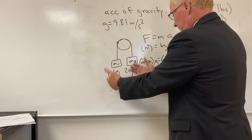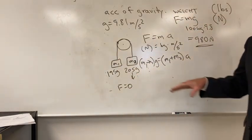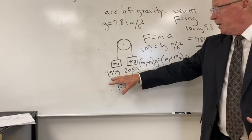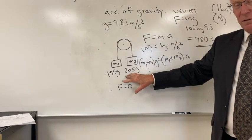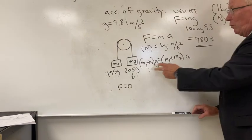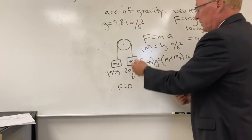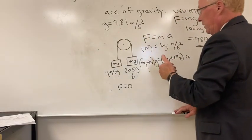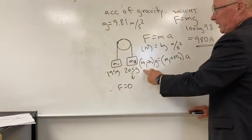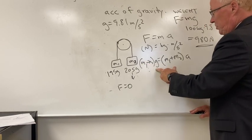In the case they are both the same, the acceleration would be zero because it's balancing out. So if one is 195 and the other is 205 grams, the difference is 10 grams. The force applied would be the difference of the two, because this is pulling down here and this is pulling down there.